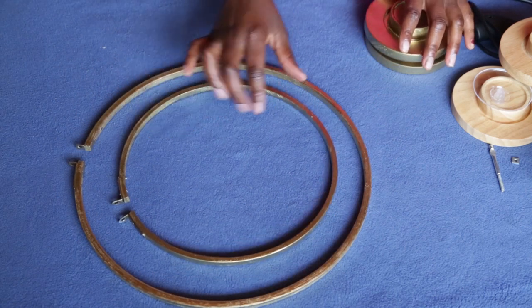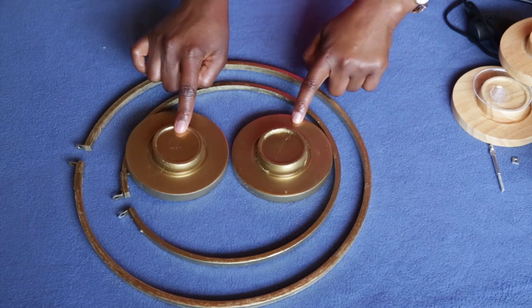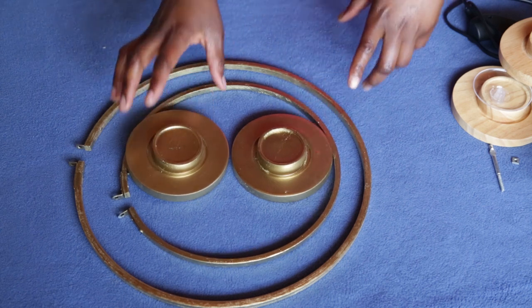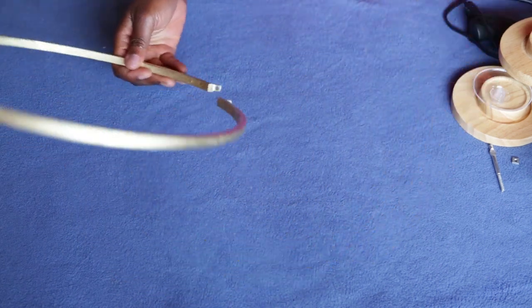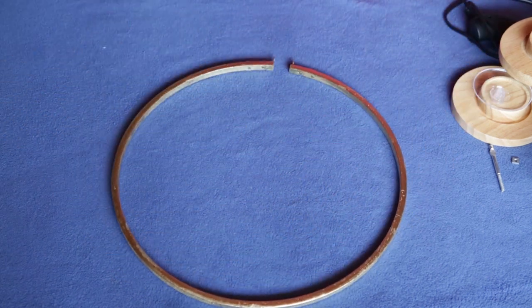Next you're going to spray paint your hoops, I did this off camera, and also you're going to spray paint your base. And then from now you can start assembling them, so we'll start with the large one.